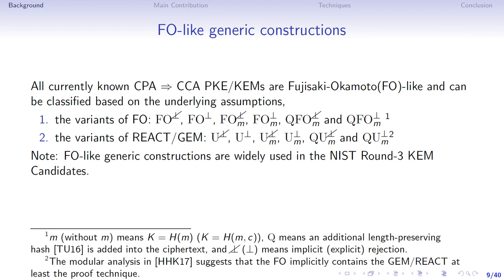Based on the underlying assumptions, these generic constructions can be grouped into two classes. One is the KEM variant of the FO transform, and the other is the KEM variant of the react-then-encrypt transform — for example, the transform U. We also call these FO-like generic constructions. The FO-like constructions are the only known transforms from CPA-PKE to CCA-KEM, and they are widely used in the NIST Round 3 KEM submissions.